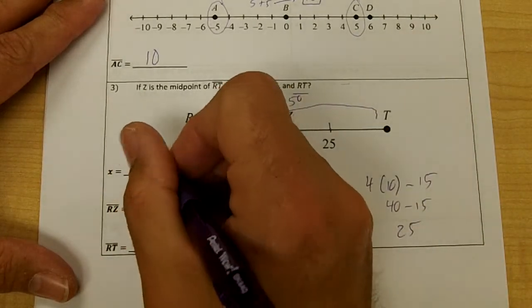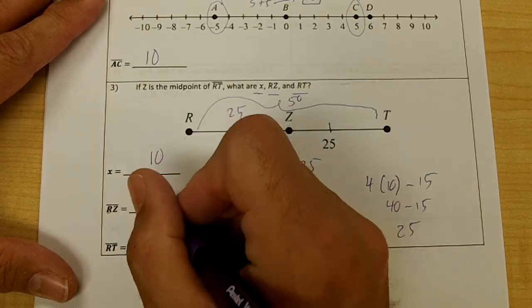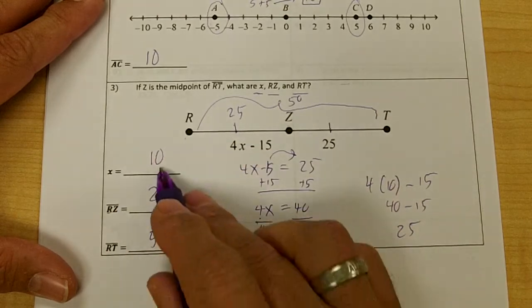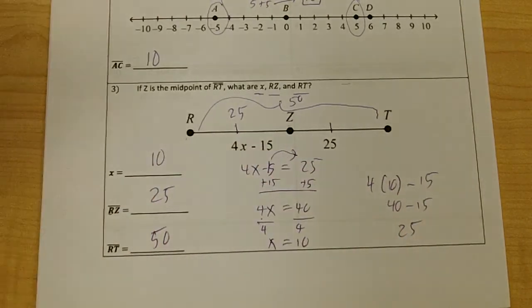So x is 10, from r to z is 25, and from r to t would be 50. Make sure they could ask for any of these, so make sure you answer your question.